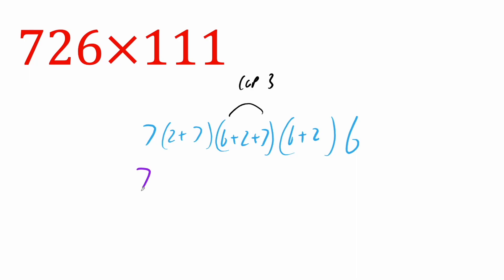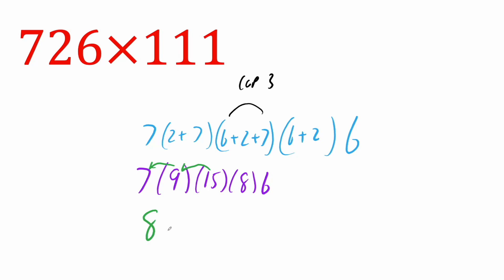So we have: seven, two plus seven is nine, six plus two is eight and eight plus seven is 15, then six plus two is eight, and then six. Again, we can't have a two-digit number, so we need to carry it. Nine plus one is 10, which we then need to carry again. So we get seven plus one is eight. That gives us: zero, five, eight, six — and that's our final answer.